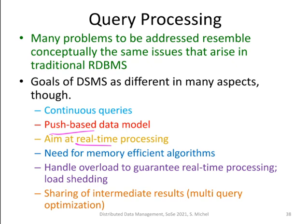When you want to guarantee real-time processing, you look at load shedding algorithms to handle overload. And specifically for data stream management systems, there is a large hope that you can share intermediate results — this goes into the area of multi-query optimization.